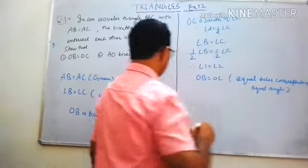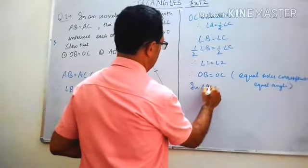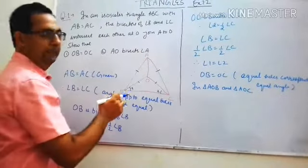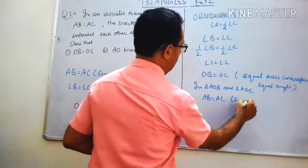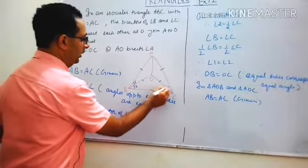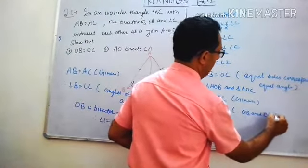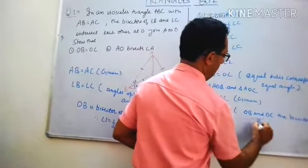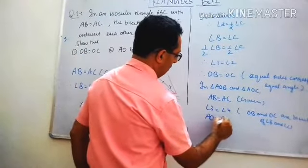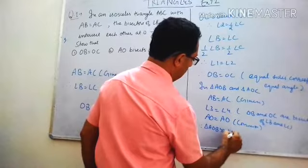Ab hum yeh do triangles lete hain: triangle AOB and triangle AOC. In triangle AOB and triangle AOC — AB aur AC barabar hain, AB is equal to AC, yeh given hai. Agar angle B aur angle C barabar hain toh unke half, angle 3 aur angle 4, bhi barabar honge. Angle 3 is equal to angle 4 because OB and OC are bisectors of angle B and angle C.